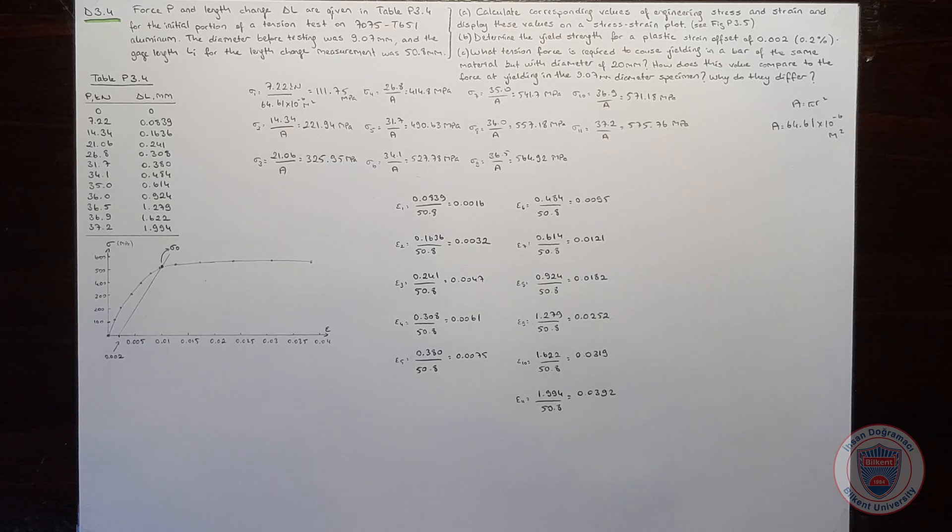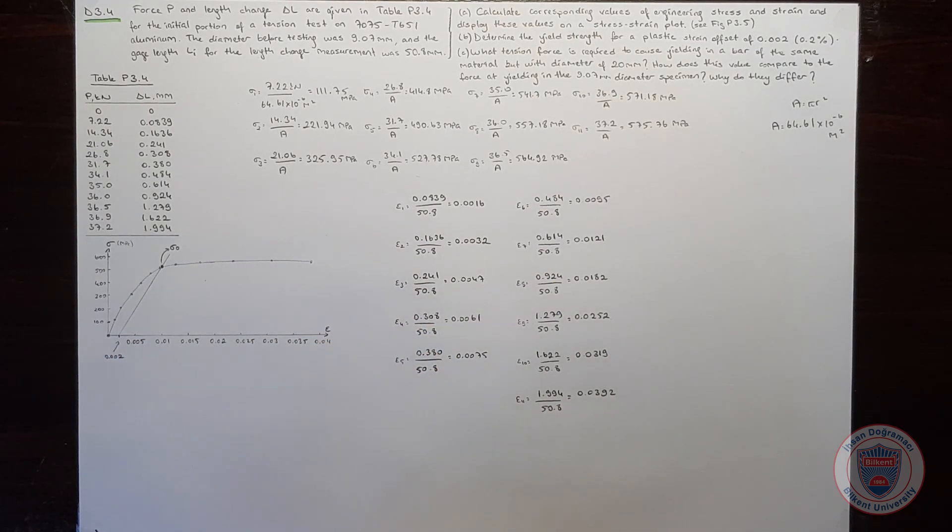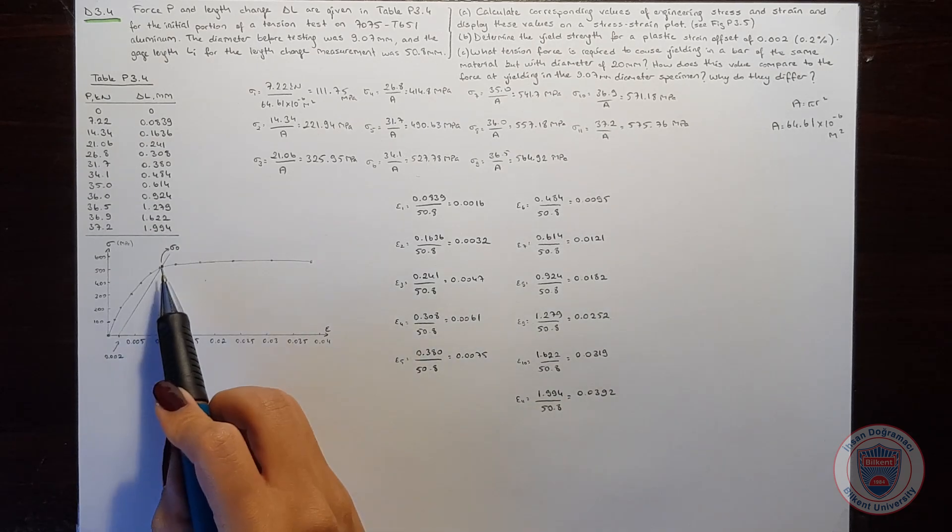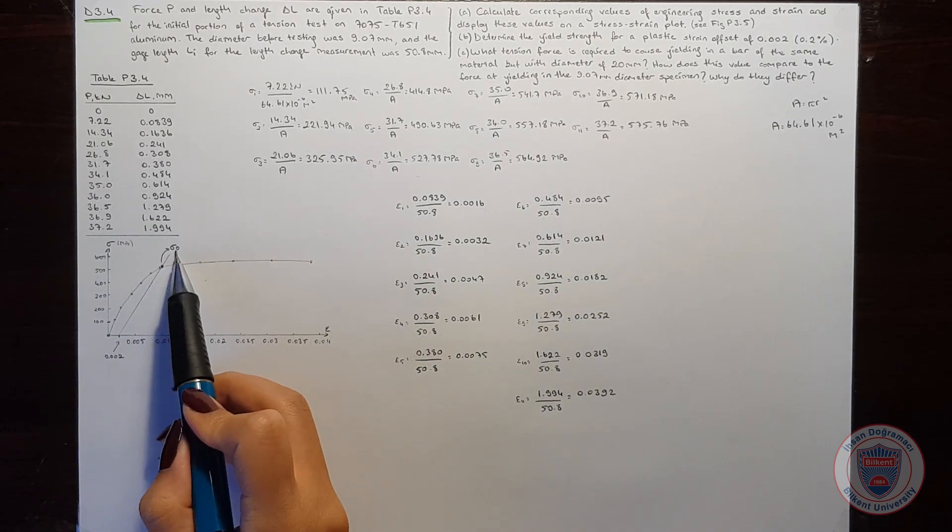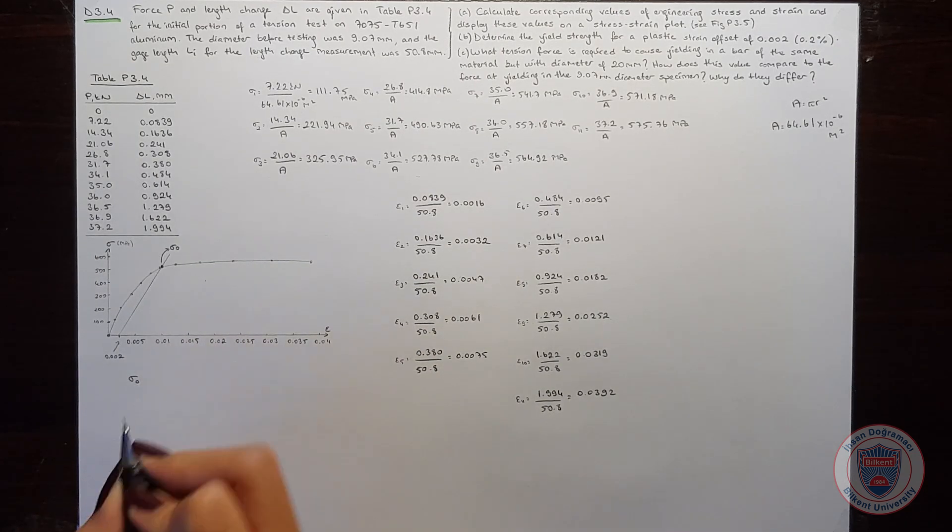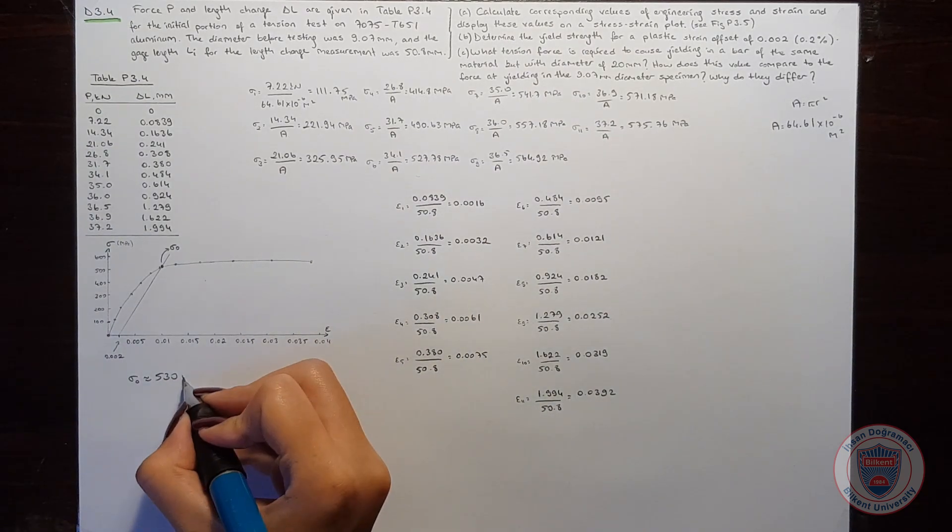So we can move to part B. We would like to determine the yield strength for a plastic strain offset of 0.2%. To find this yield strength, we will draw a parallel line to the curve starting from 0.2% strain. When we draw this line, we can see that sigma Y, which is the yield strength, is approximately 530 MPa.